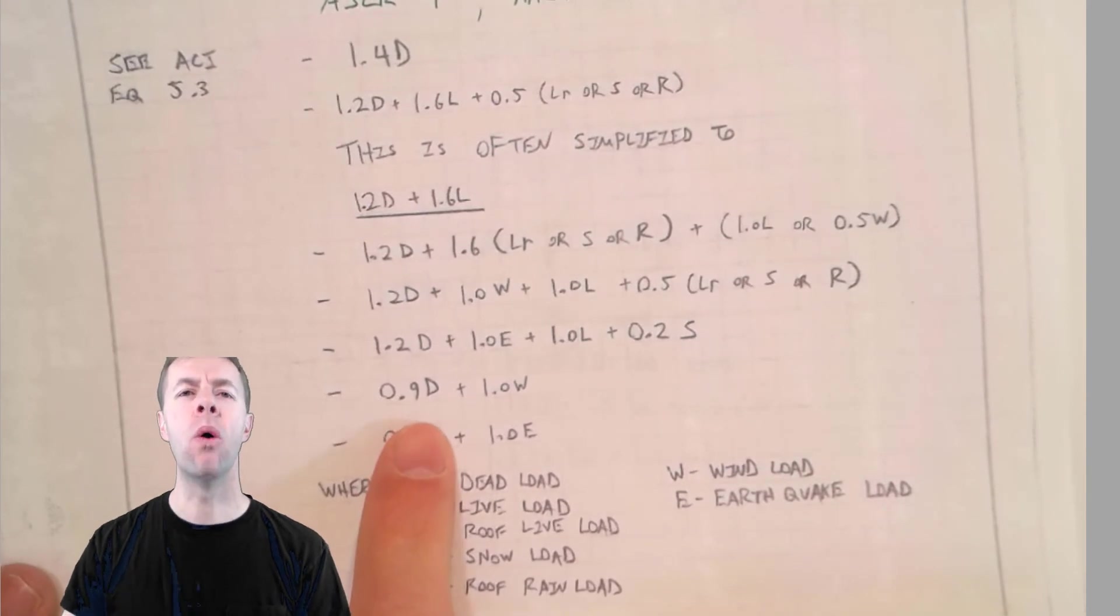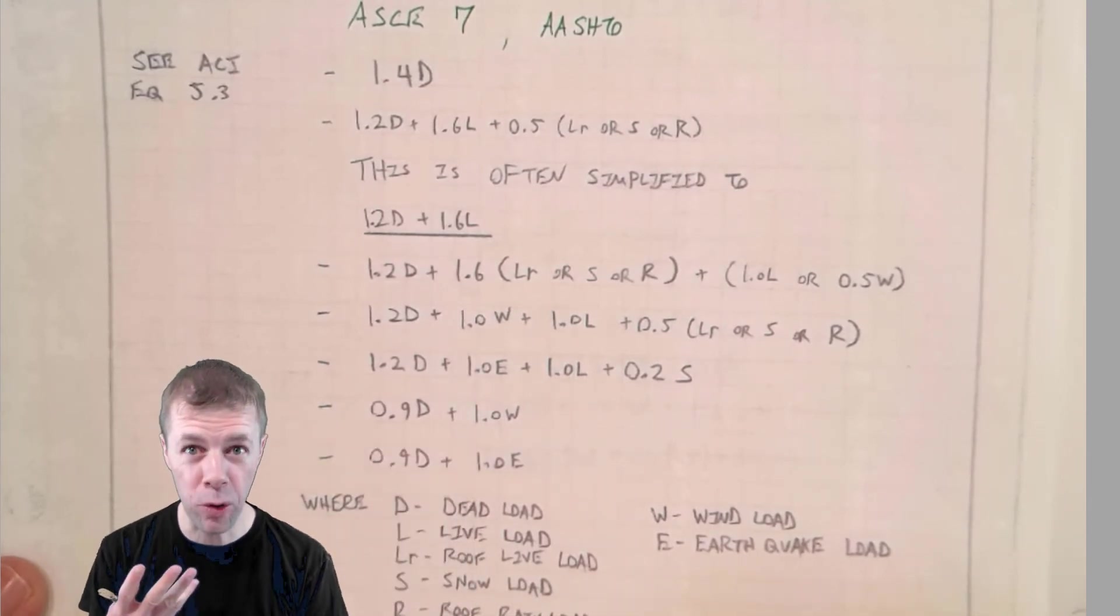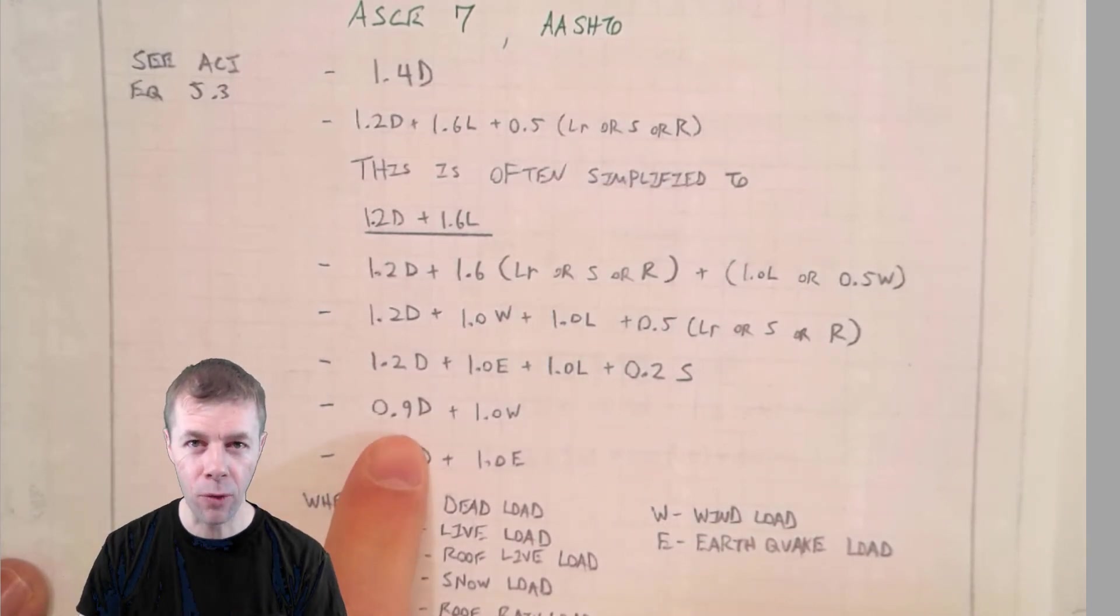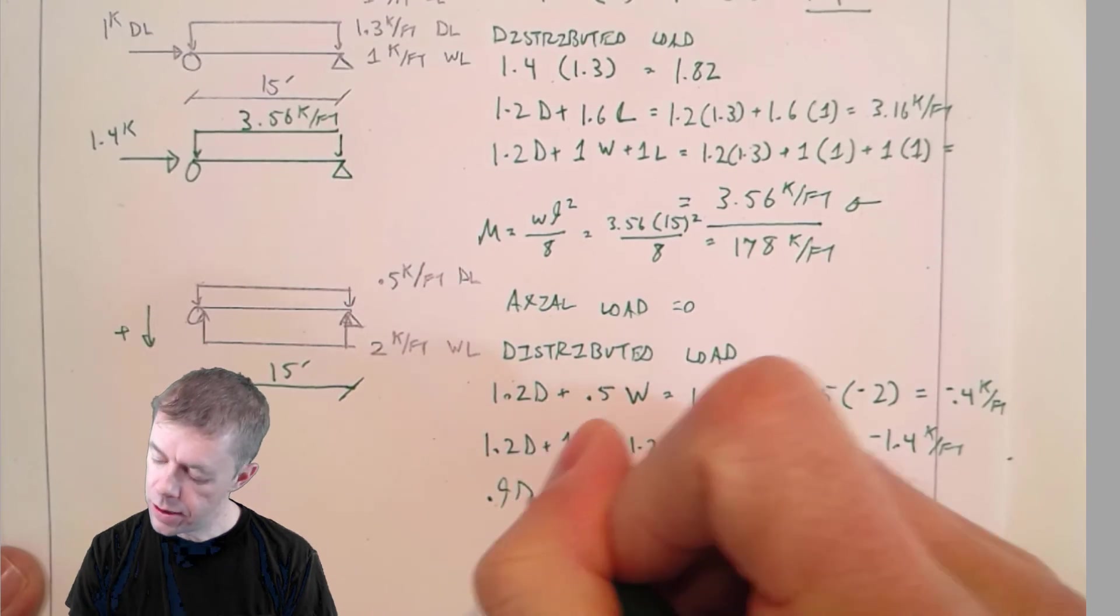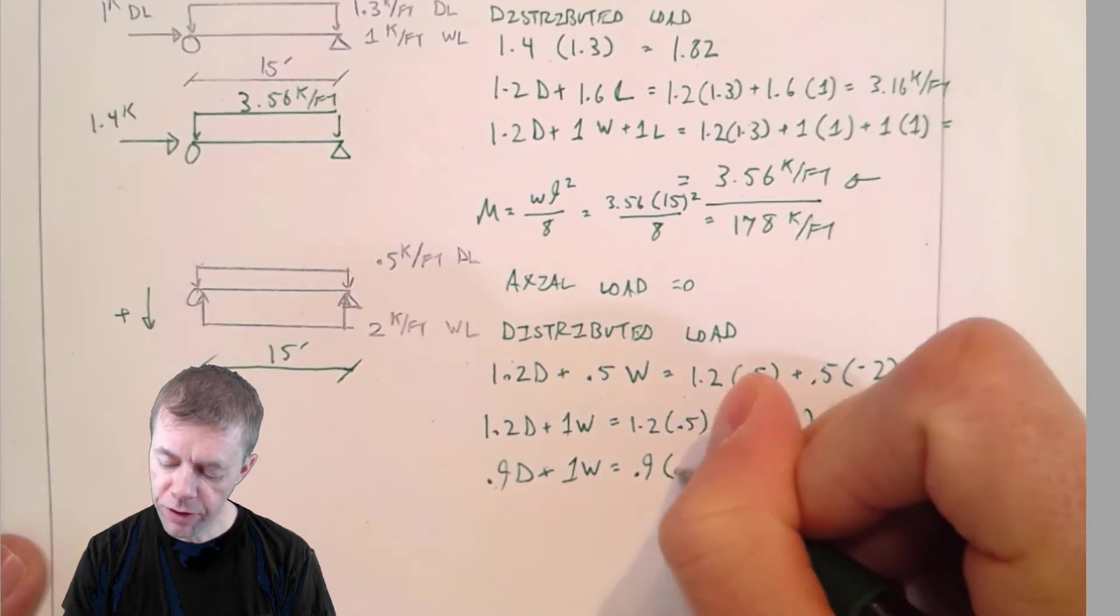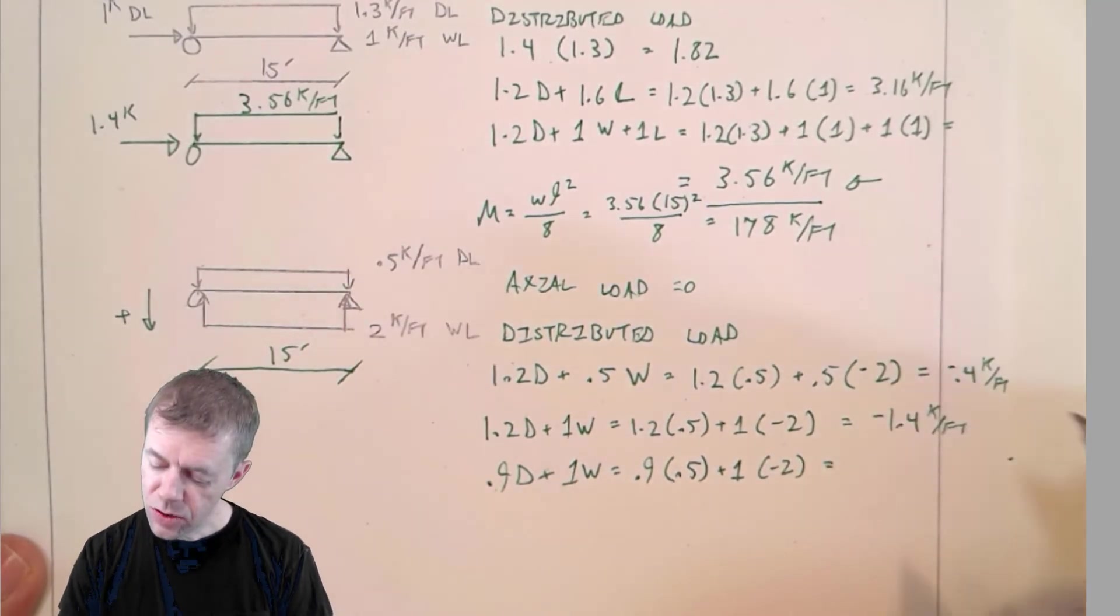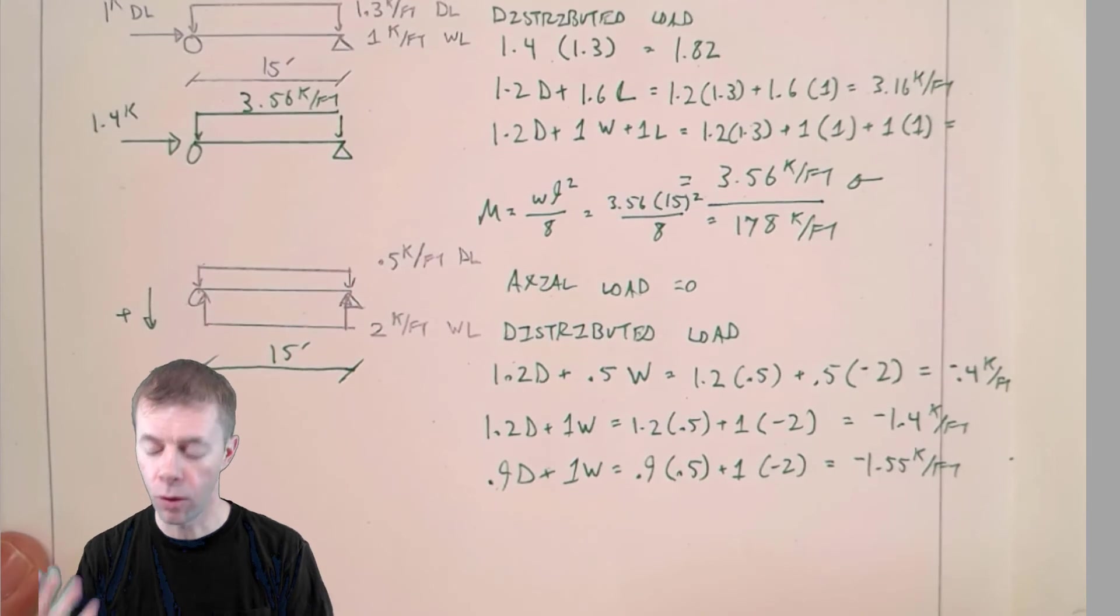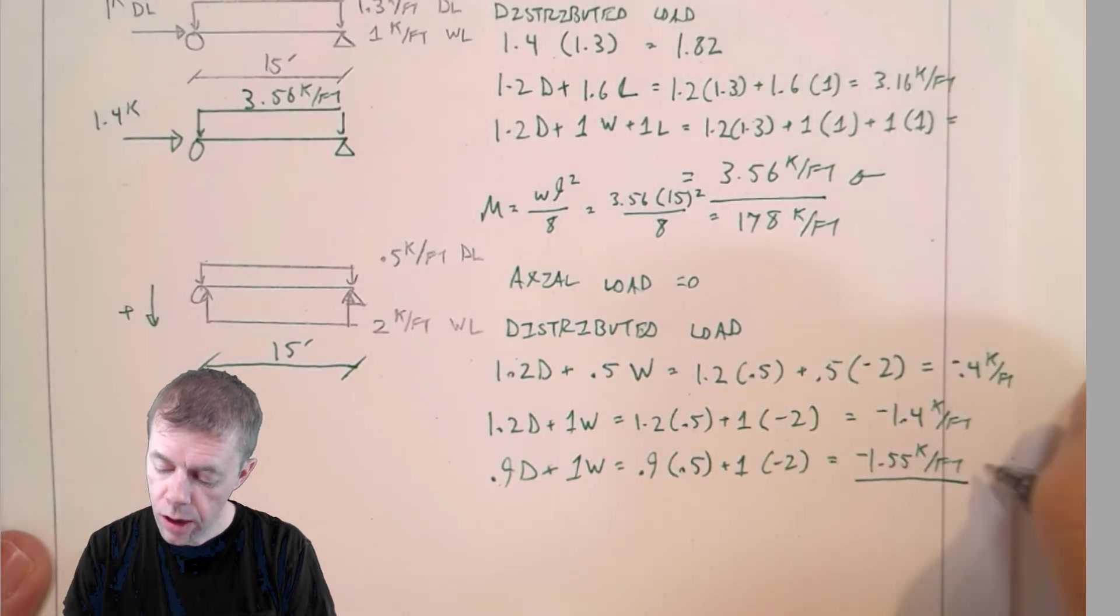Here's another one. In the previous video, I mentioned that sometimes when you have these weird situations where dead load can help you, dead load can actually misinform you, that sometimes you actually design for only 90% of the dead load. What? Let's try this one. 0.9 dead plus 1 wind. 0.9 times my dead load, which is 0.5, plus 1 times negative 2. And now that value is negative 1.55 kips per feet. So which one am I going to design for? The largest one, the largest absolute value one. This one is going to control.